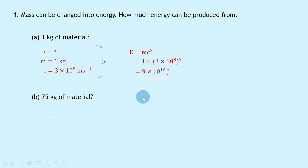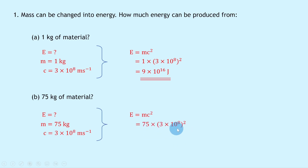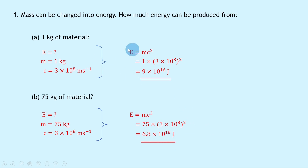For part b, how much energy can be produced from 75 kilograms of material? We're trying to find the energy E, the mass is 75 kilograms, and the speed of light is 3×10⁸ m/s. Using E = mc² and substituting gives us 75 × (3×10⁸)², which gives an answer of 6.8×10¹⁸ joules. A quicker way is to simply multiply your answer from part a by 75 to get the same answer.